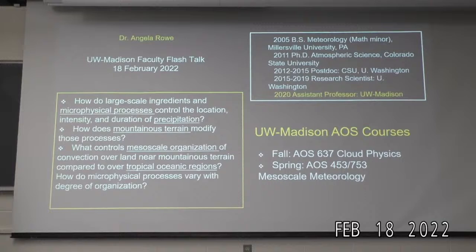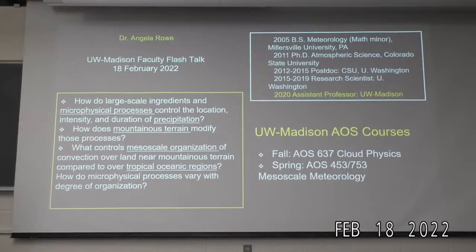What I'm ultimately trying to understand are large-scale ingredients and microphysical processes that control the location, intensity, and duration of precipitation. I'm particularly interested in how mountainous terrain influences all of these processes. A lot of my work focuses in mountainous regions, but I've also looked at mesoscale organization over tropical oceanic regions.